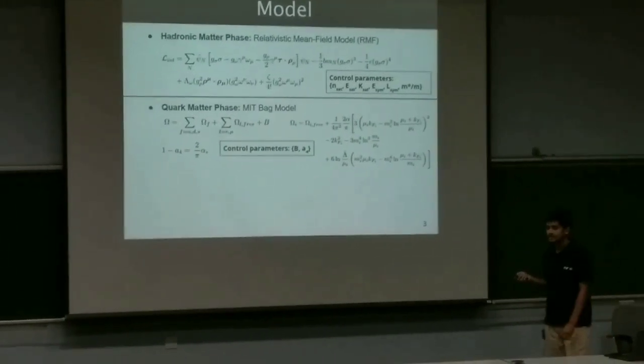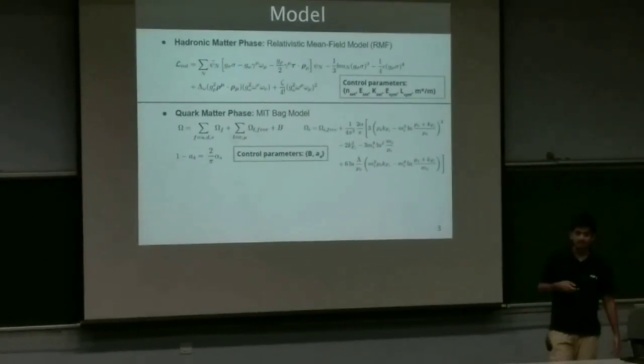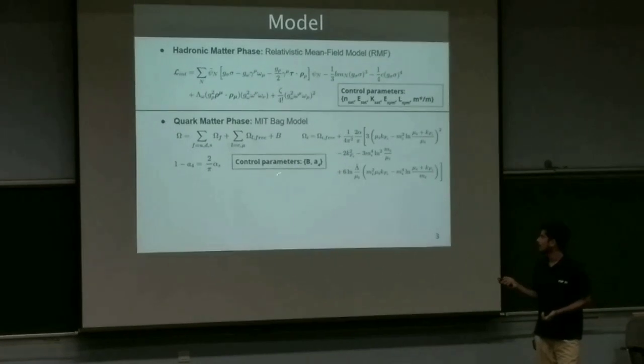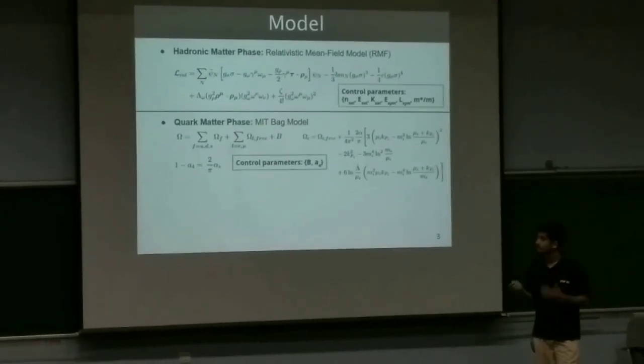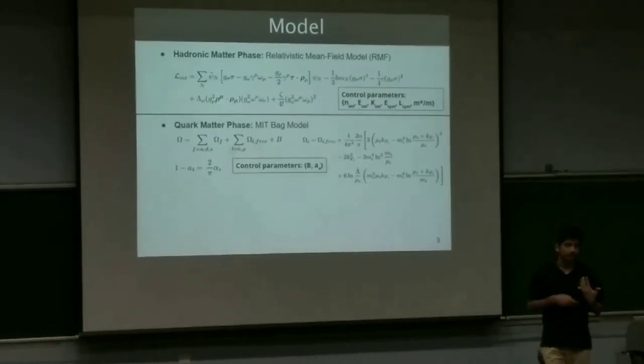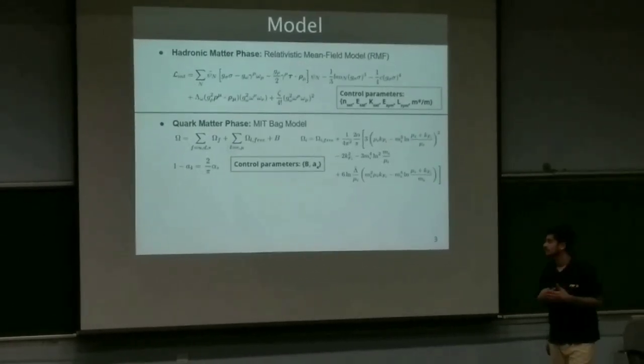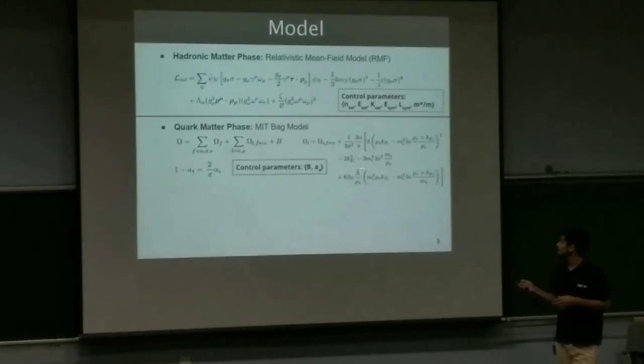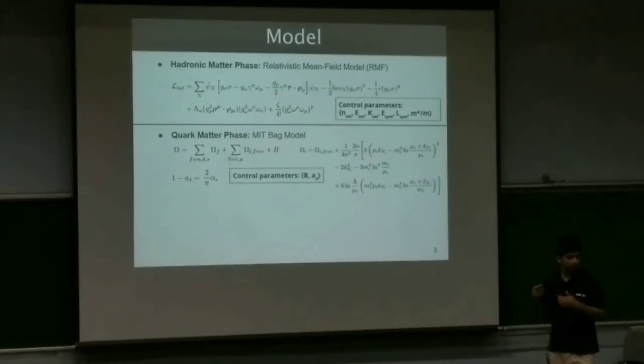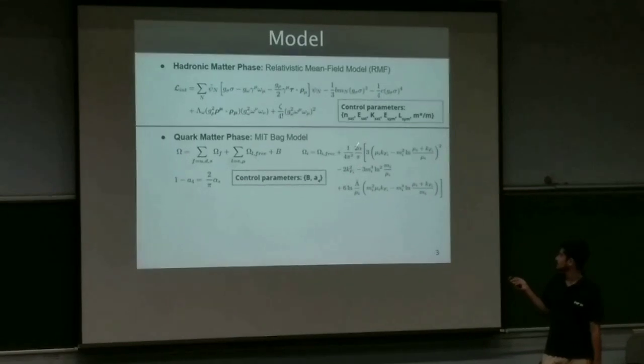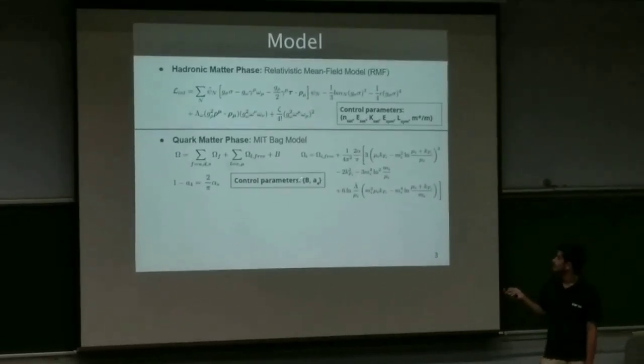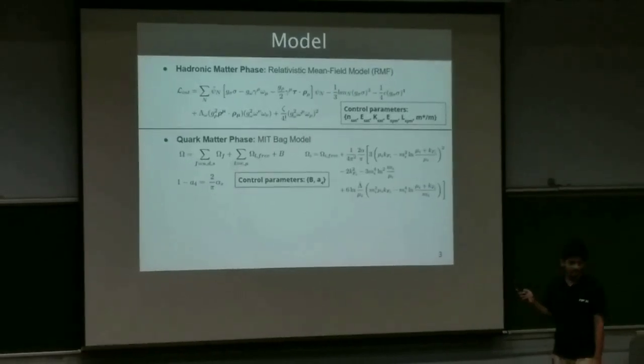For the quark phase, there is an MIT bag model which was introduced in 1984, which is a simplistic version, phenomenological model for deconfined quarks, which has this bag parameter B which takes care of all the non-linearities in the QCD theory. And it also adds interaction between the quarks up to first order in this running coupling constant alpha_s, which is redefined in terms of a4. So for the quark, we have these two control parameters, B and a4, in total.